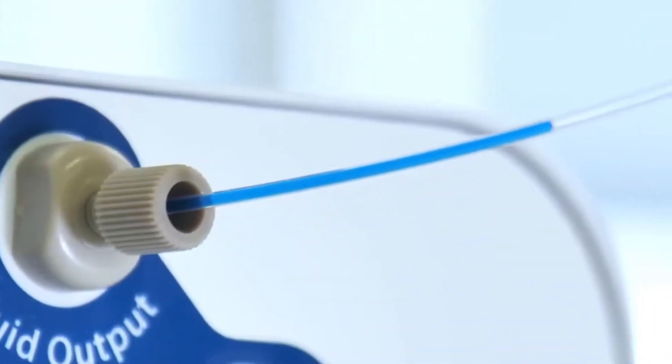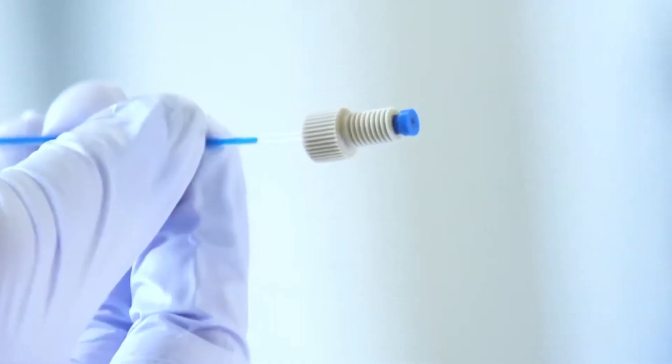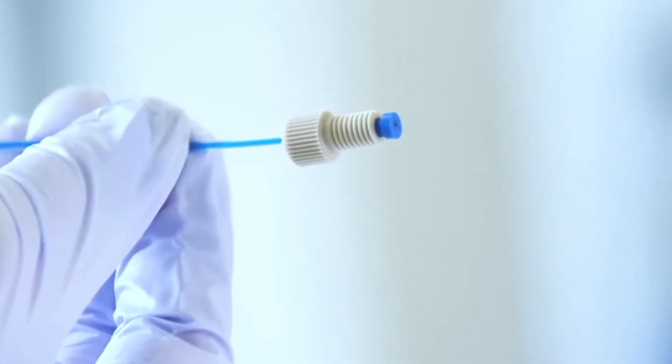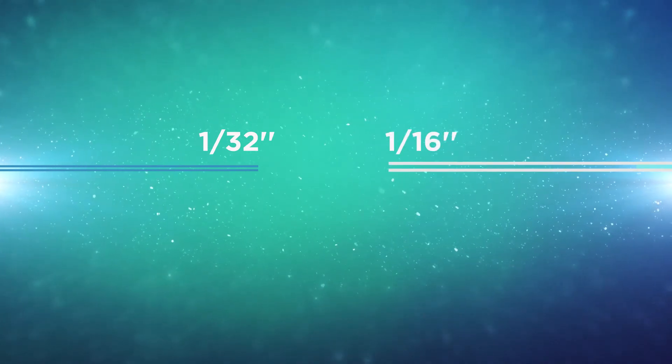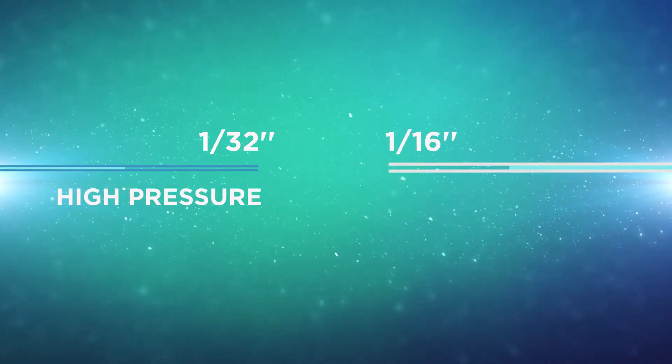Pressure amount will also define which tubing fits best in experiment, especially regarding tubing inner diameter. Standard sizes of tubing which are 1/32nd inch or 1/16th inch are respectively meant for high pressure based flow and low pressure based flow.